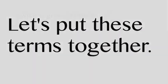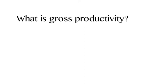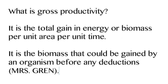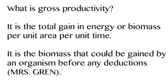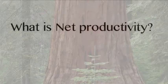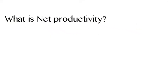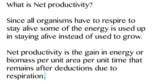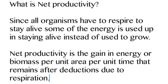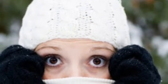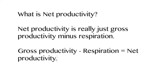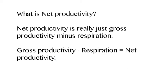Now let's put all the terms together. Gross productivity is the total gain of biomass or energy in an area before any deductions happen — so the total amount of biomass made or energy converted in a forest. Net productivity is gross productivity minus respiration, since all organisms have to respire to stay alive. It's the gain of what you have left. So: net productivity equals gross productivity minus respiration — that tells us how much energy we have left over after respiration.